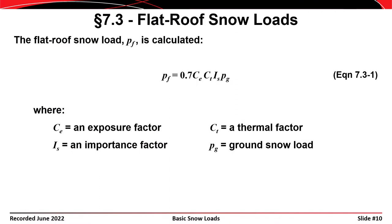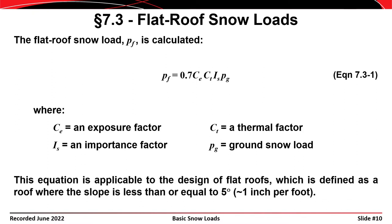This is the equation for calculating the flat roof snow load, P sub F — equation 7.3-1 from ASCE 7. It reads: P sub F equals 0.7 times C sub E times C sub T times I sub S times P sub G. P sub G is the ground snow load, I sub S is the importance factor, C sub T is the thermal factor, and C sub E is the exposure factor. This equation applies to flat roofs, defined as slopes less than or equal to five degrees (about one inch per foot). For sloped roofs, we first determine the flat roof snow load and then modify it.